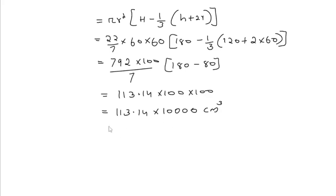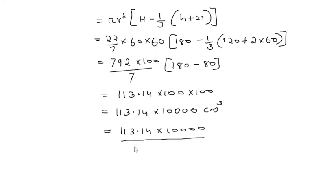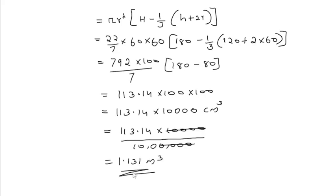To convert into cubic metres, divide by 100 cubed, which is 1,000,000. So 113.14 × 10000 divided by 1,000,000 gives approximately 1.131. The volume of water left in the cylinder is approximately 1.131 m³.